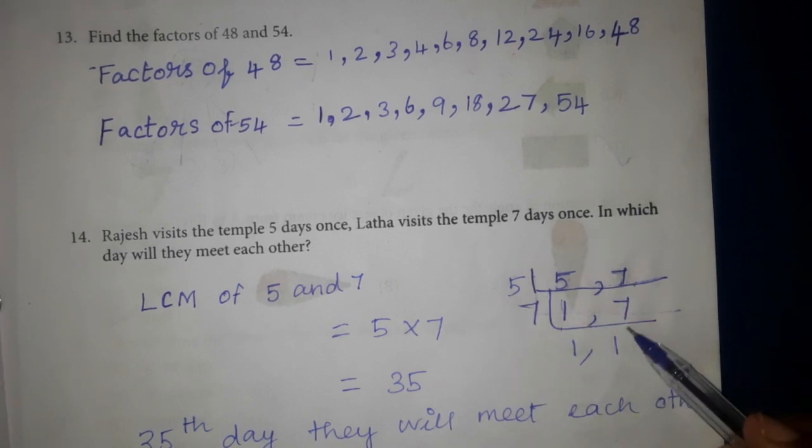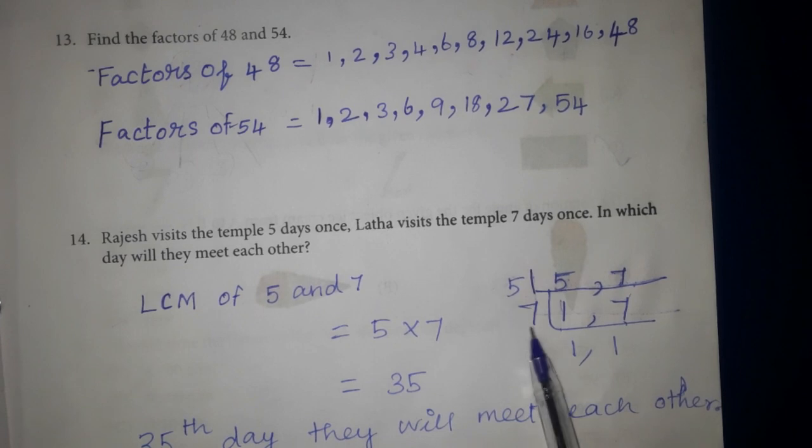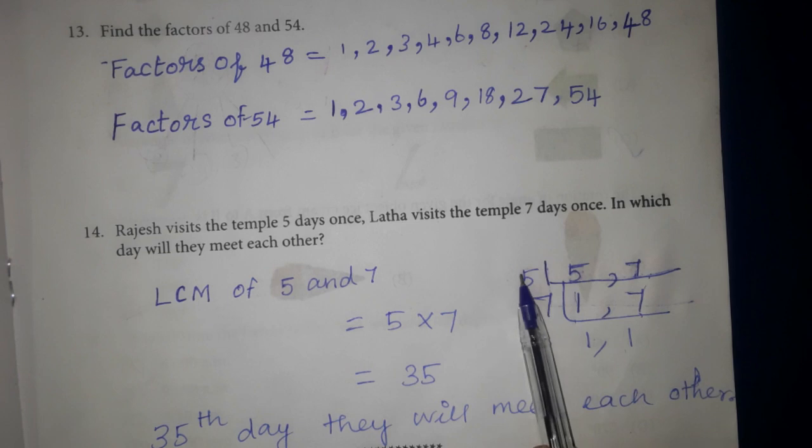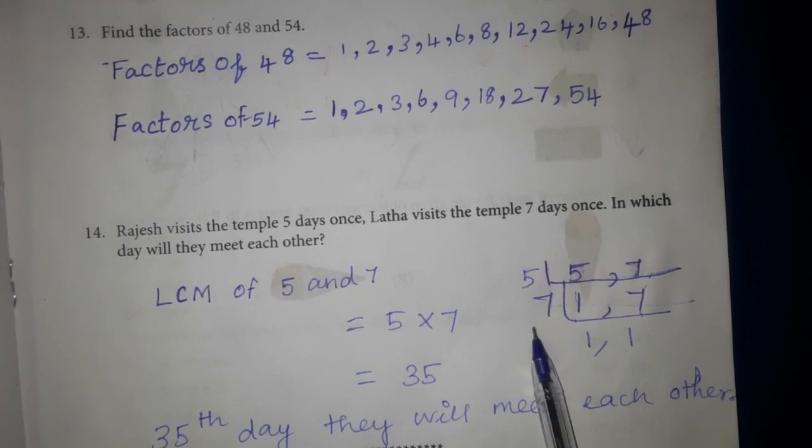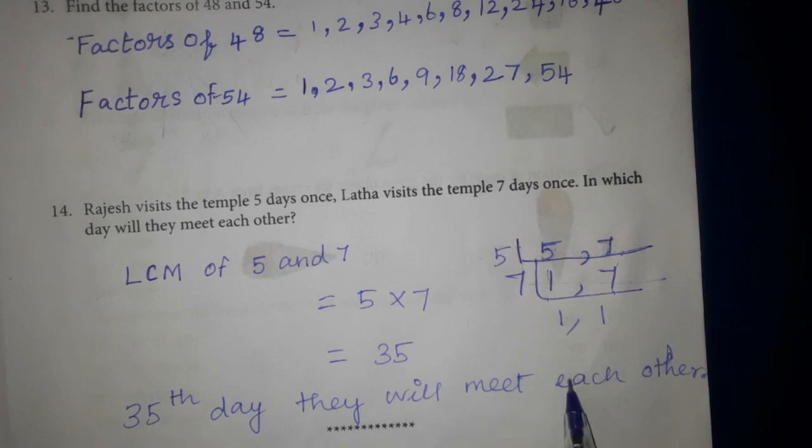This is 7 table. 7 table 7 times 1. Now we multiply. 5 and 7 is 35. On the 35th day they will meet each other.